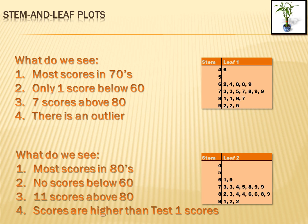Now let's look at test 2. We can see that most of the scores are in the 80s — more 80s than anything else. There are no scores below 60, none in the 40s or 50s. There are 11 scores above 80. And I can see that the scores in general on test 2 were higher than on test 1 — more scores above 80, fewer scores below 60, and no outlier. So the scores were higher on the second test.